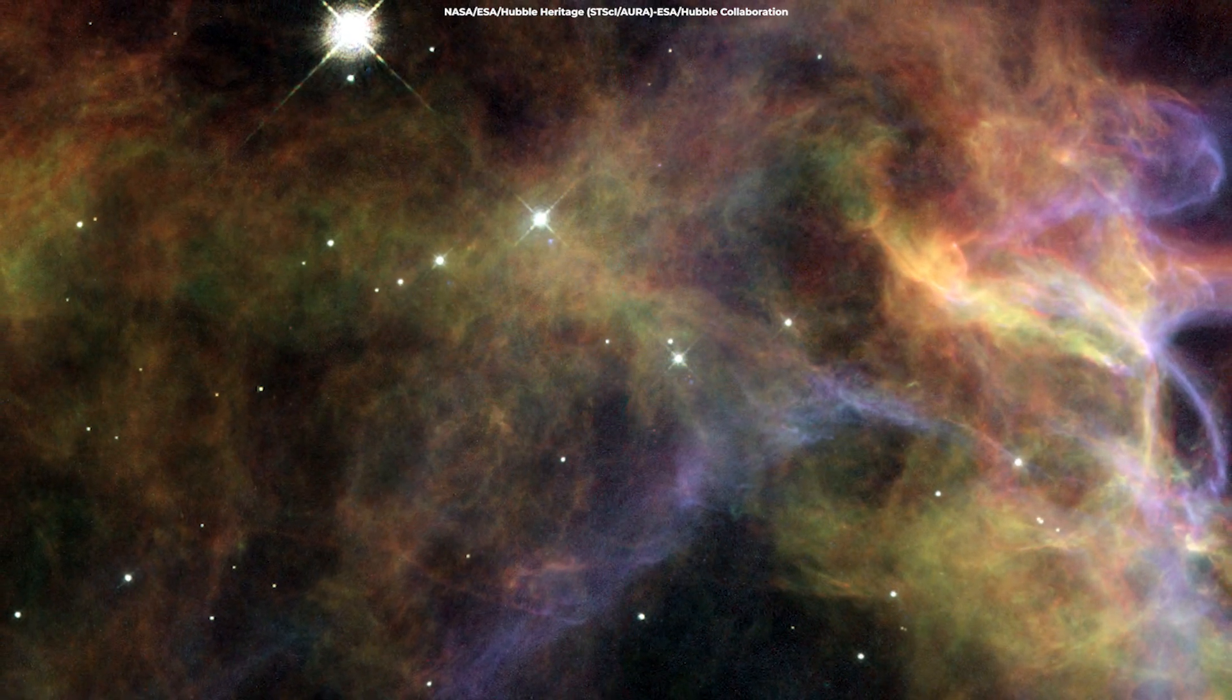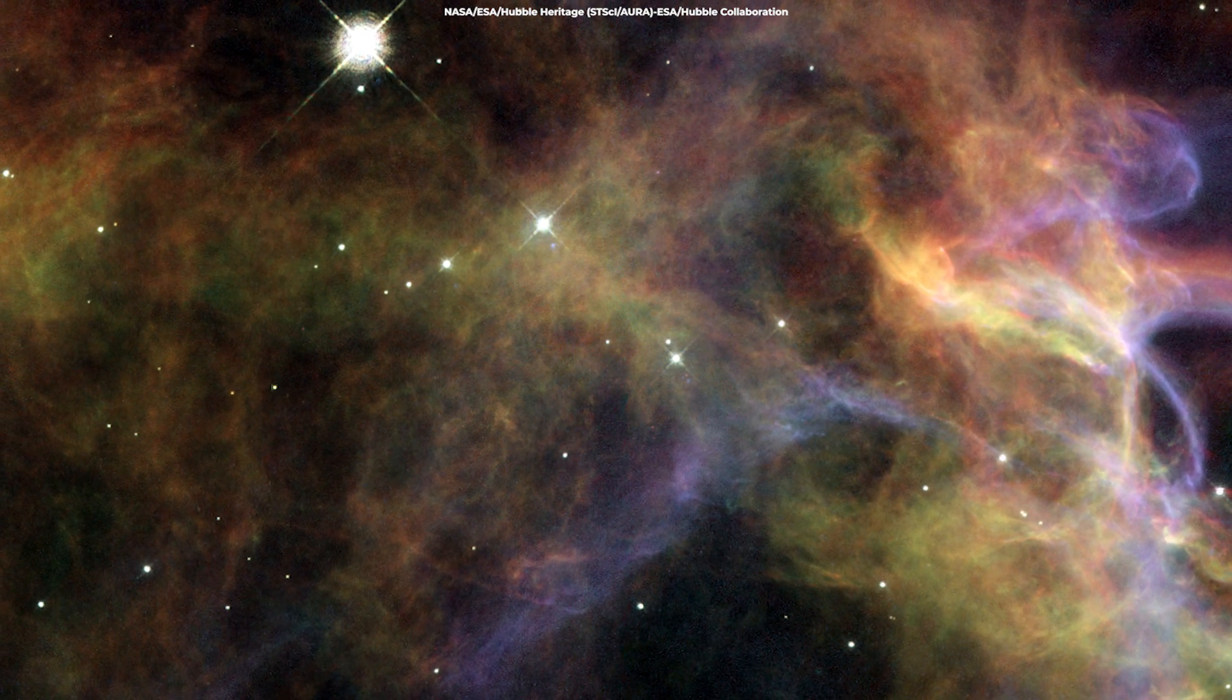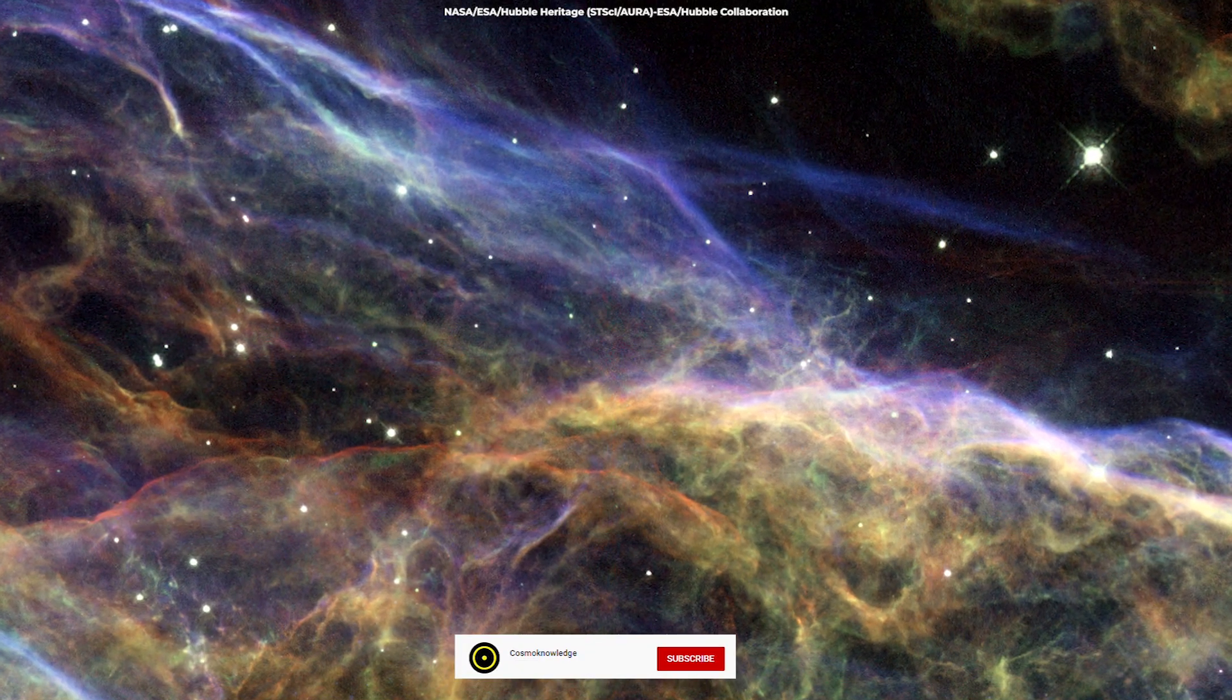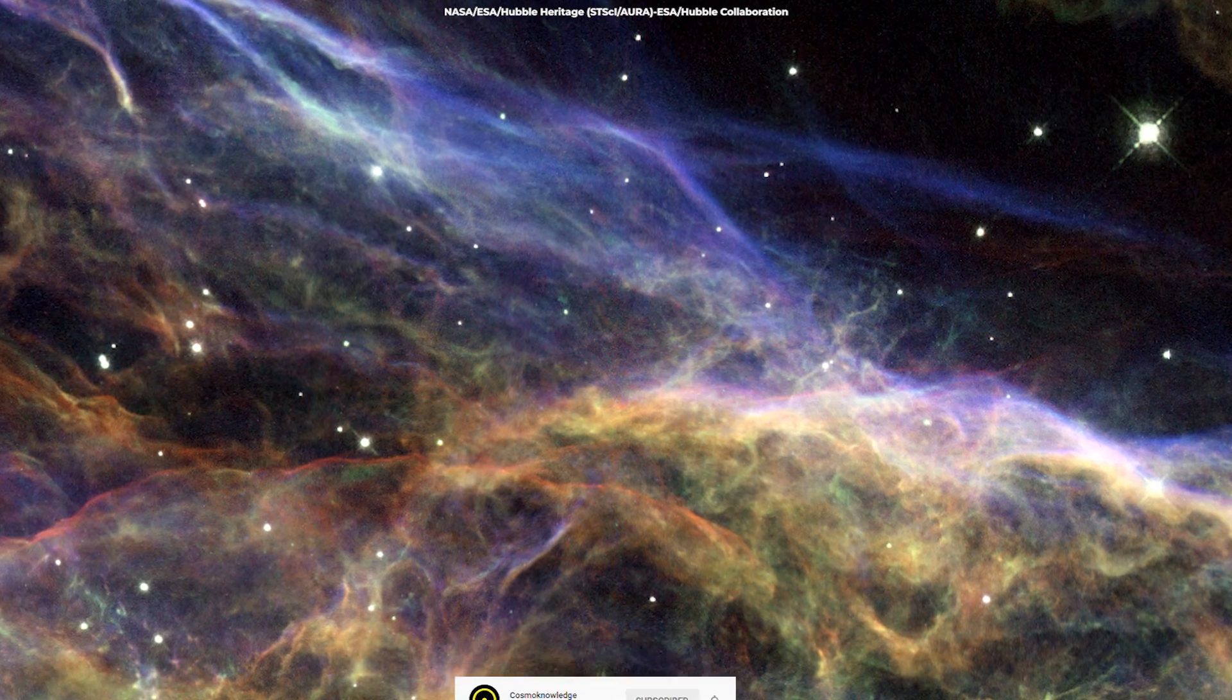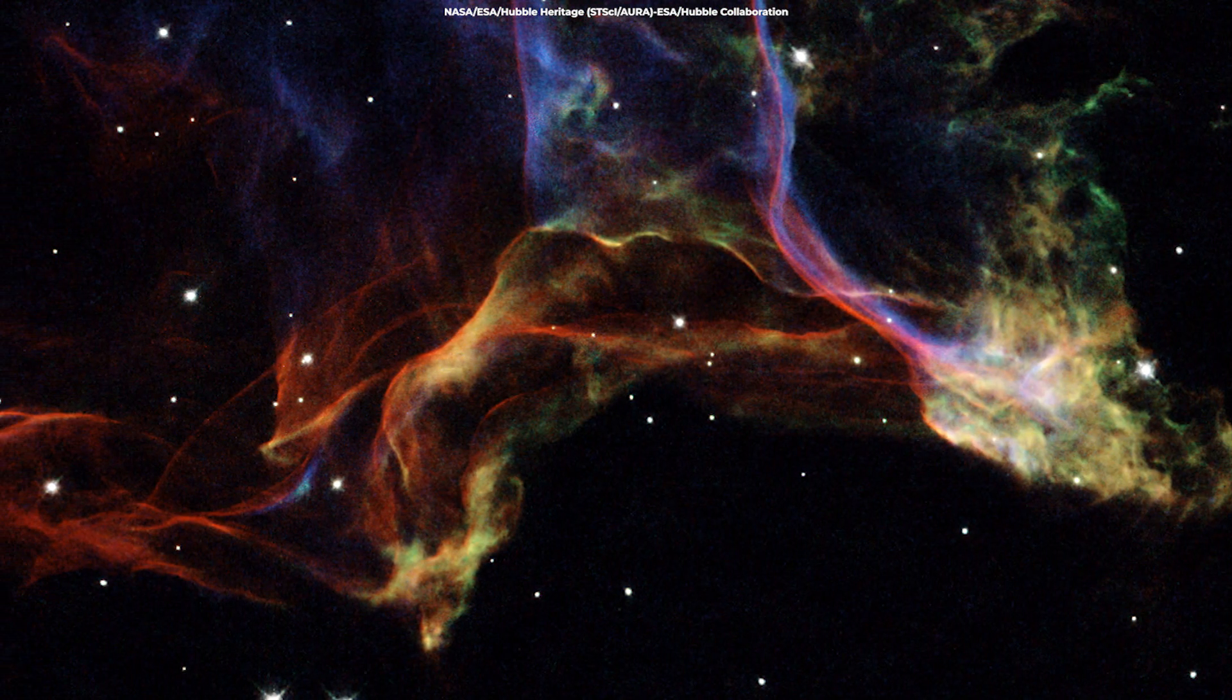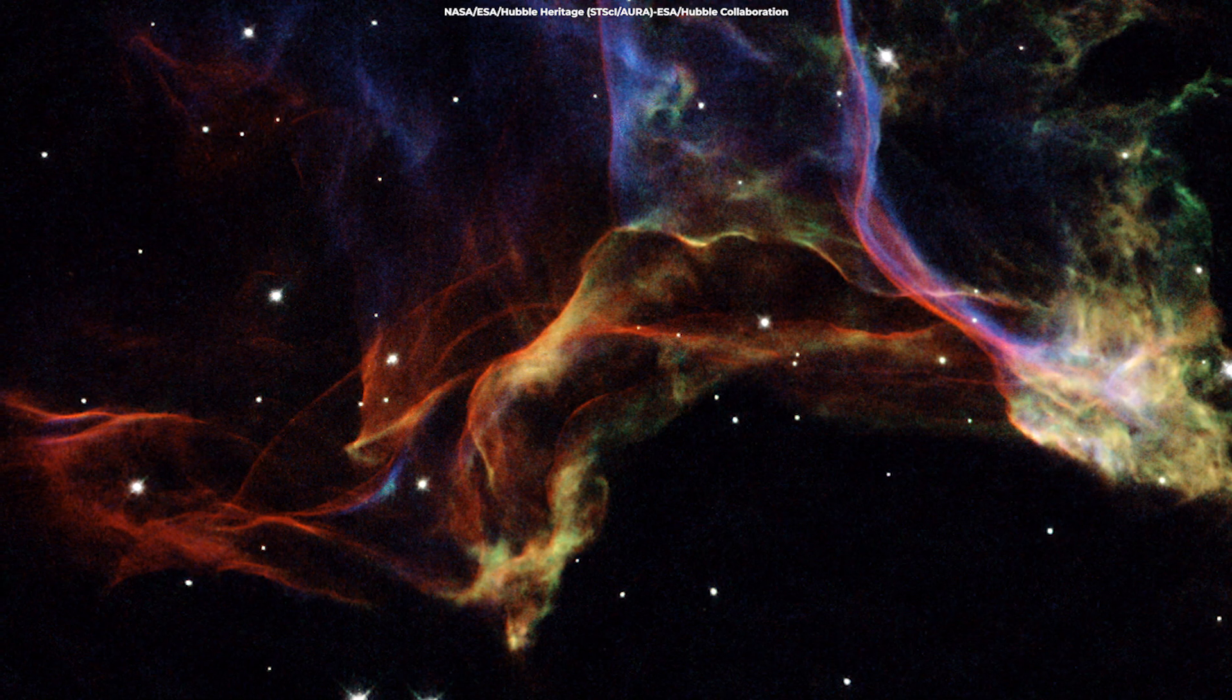For the first time back in 2007, Hubble photographed three beautiful sections of the Veil Nebula. The images provide stunningly detailed views of the subtle structure resulting from a cosmic explosion.